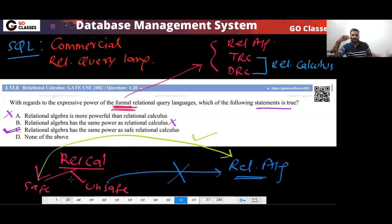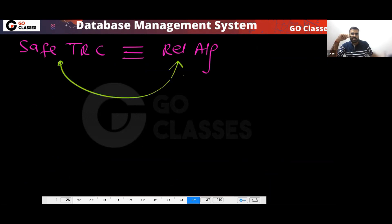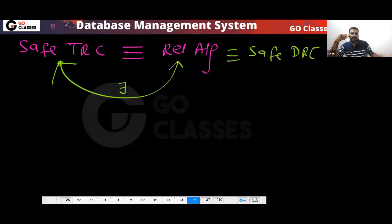This is the bijection. So finally, Relational Algebra has the same power as safe Relational Calculus. Safe RC has the same power as Relational Algebra — meaning for every safe RC query there exists a Relational Algebra query, and for every Relational Algebra query there exists a TRC query. The same power holds for safe DRC. Ultimately, TRC has more power than Relational Algebra.